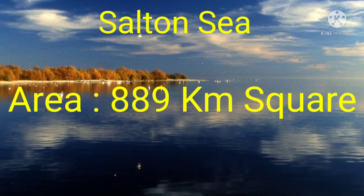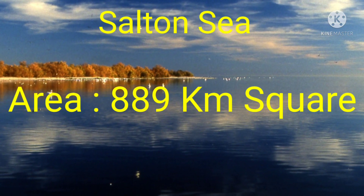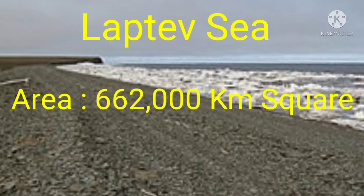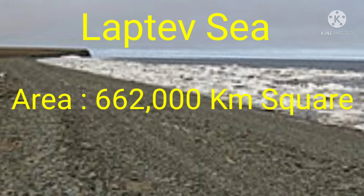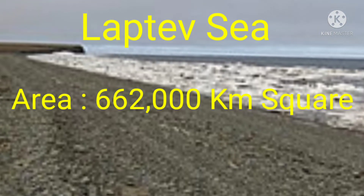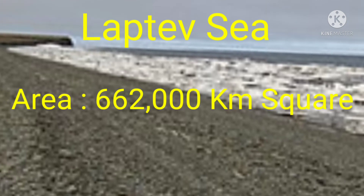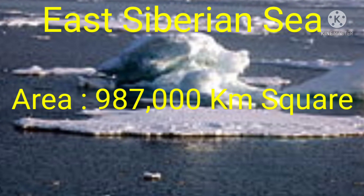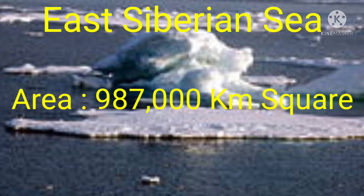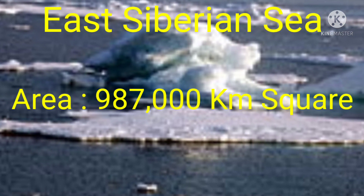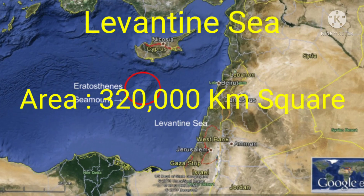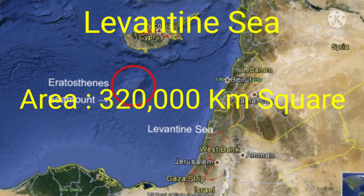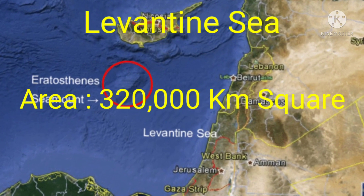Salton Sea — the area of the Salton Sea is 8,883,000 km². Laptev Sea — the area of the Laptev Sea is 662,000 km². East Siberian Sea — the area of the East Siberian Sea is 987,000 km². Levantine Sea — the area of the Levantine Sea is 320,000 km².